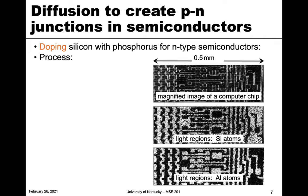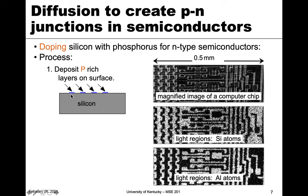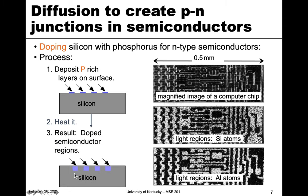Another important area is semiconductors. Silicon wafers are made extremely pure, but we actually like to dope in other materials such as phosphorus to make different types of semiconductors like n-type. Similar to case hardening, we start with silicon, deposit a phosphorus-rich layer on the surface, then heat it up so phosphorus atoms diffuse into the surface to create doped regions. This is important for the creation of pn junctions in semiconductors.